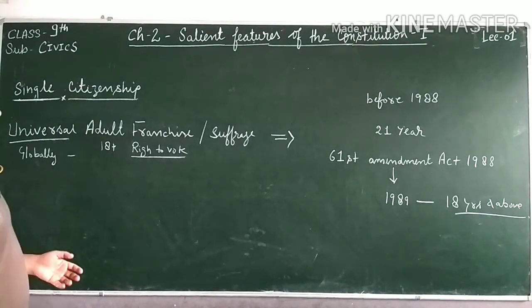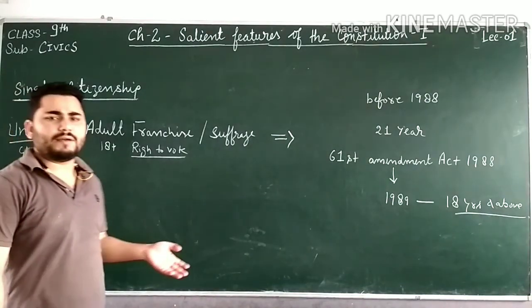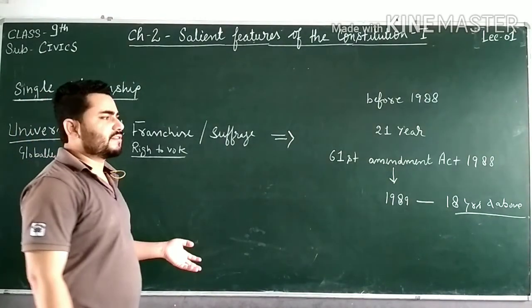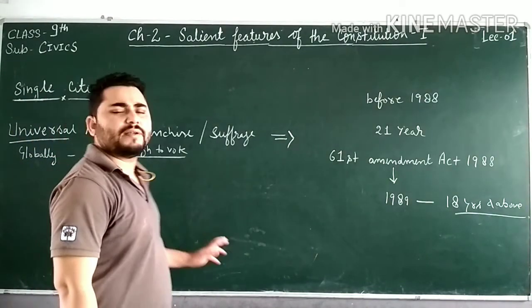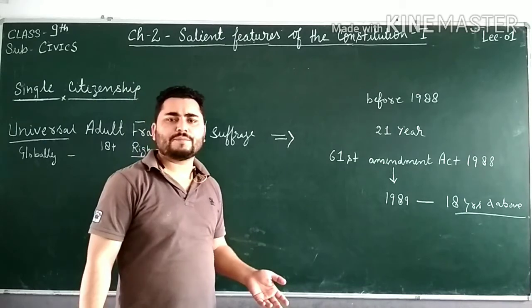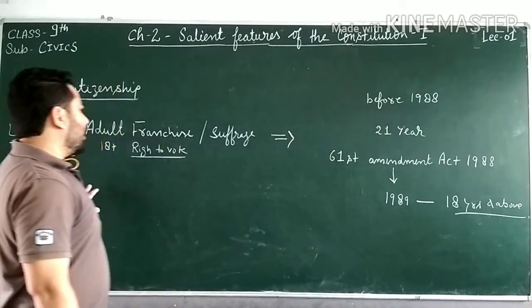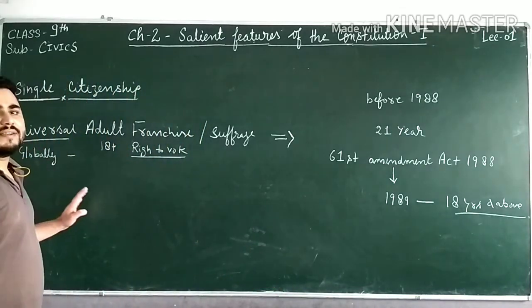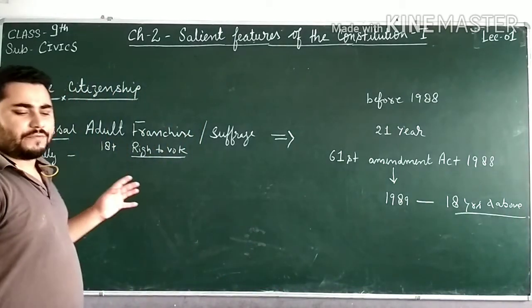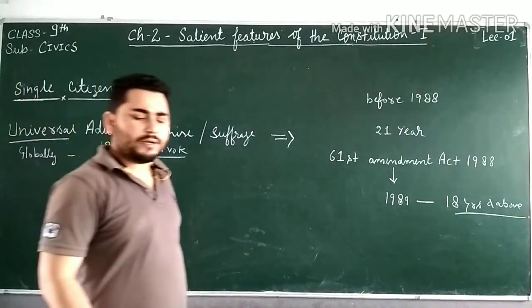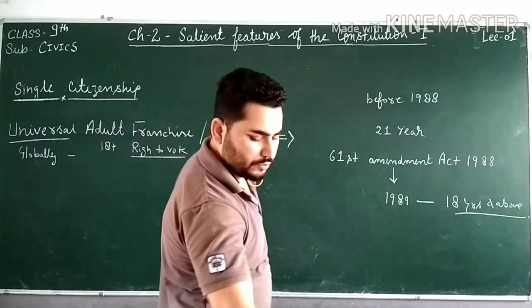This was all about universal adult franchise. The third salient feature of our constitution is fundamental rights, and the fourth will be directive principles of state policy, which will be covered in the next chapter. We will study about fundamental rights in detail in the next video. Thank you so much.